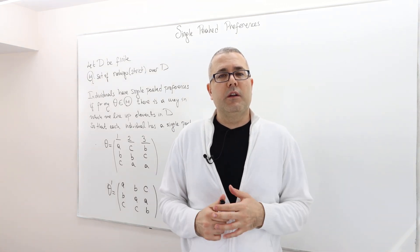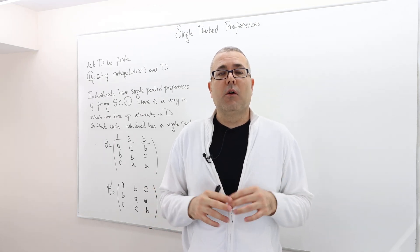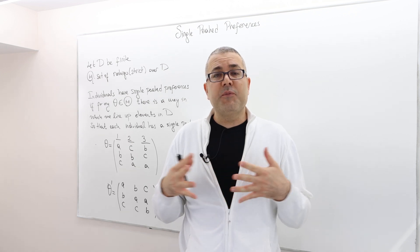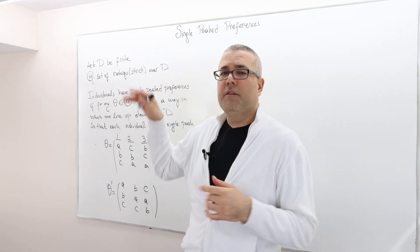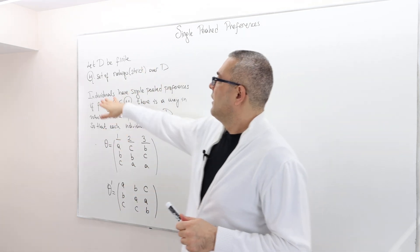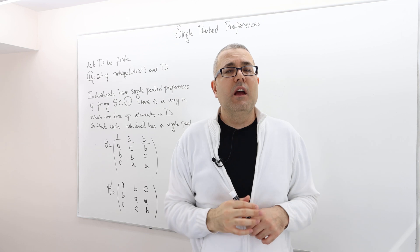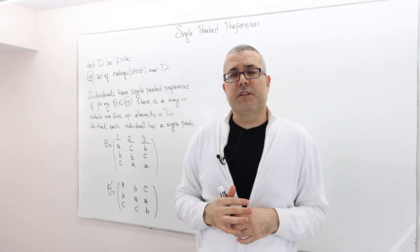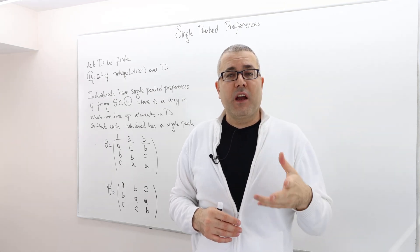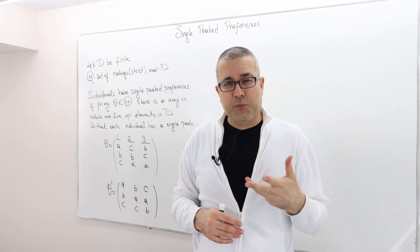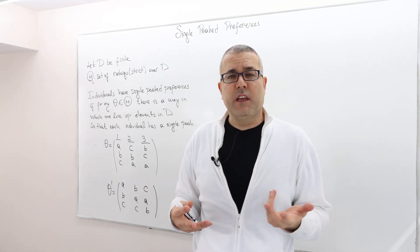In the previous episode, we learned that, thanks to the Gibbard-Satterthwaite impossibility theorem, when the preference domain or type space is unrestricted — meaning D, whether it's finite or infinite, doesn't matter — and theta includes all strict rankings over the set D, then in this environment there's not going to be a strategy-proof social choice function with nice properties. Those nice properties are actually very weak: its range should have at least three elements in it.